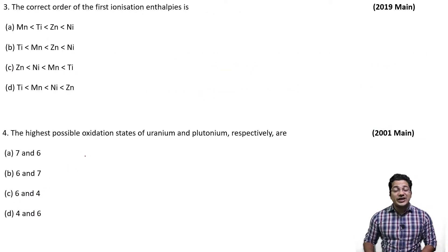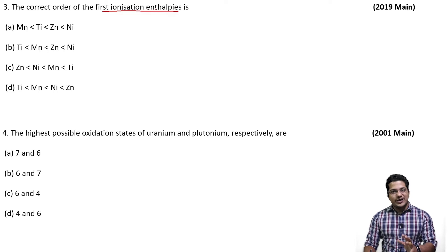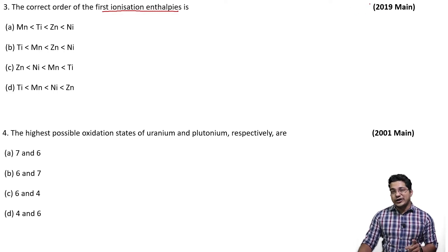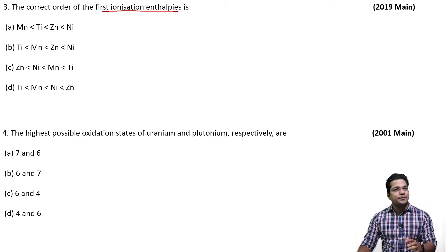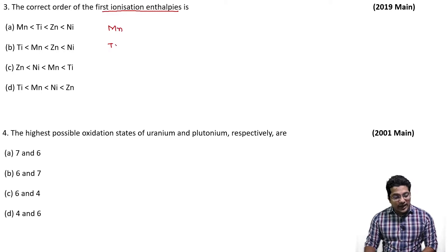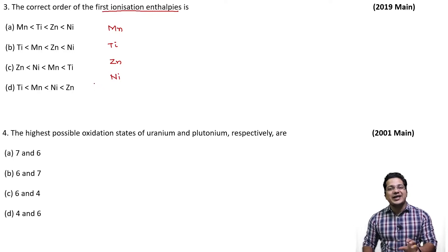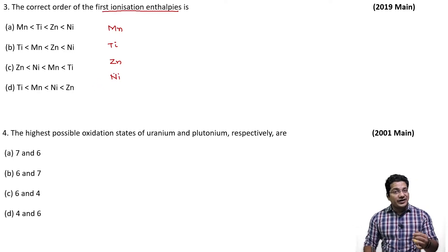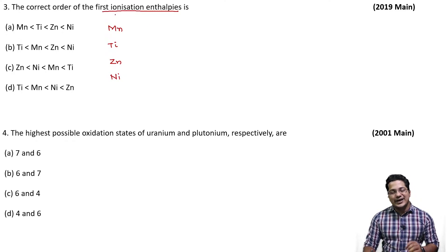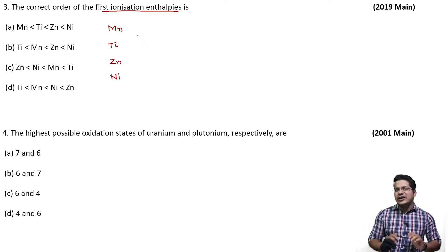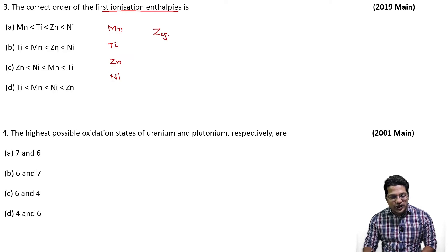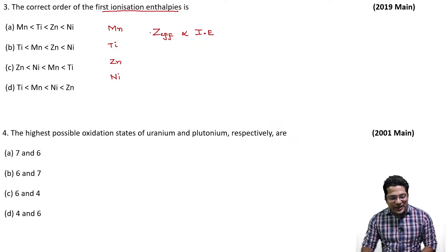The third question — also a 2019 JEE Mains question — asks for the correct order of first ionization enthalpies for Mn, Ti, Zn, and Ni. All these elements belong to the 3d series. As effective nuclear charge increases moving left to right in the periodic table, the ionization energy needed to remove the outermost electron increases.